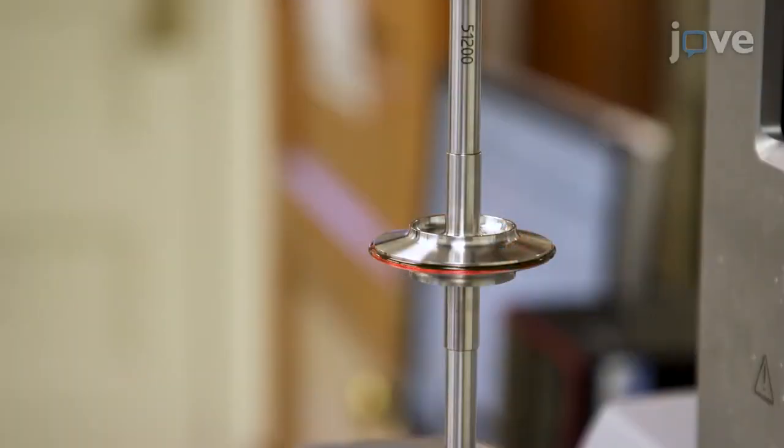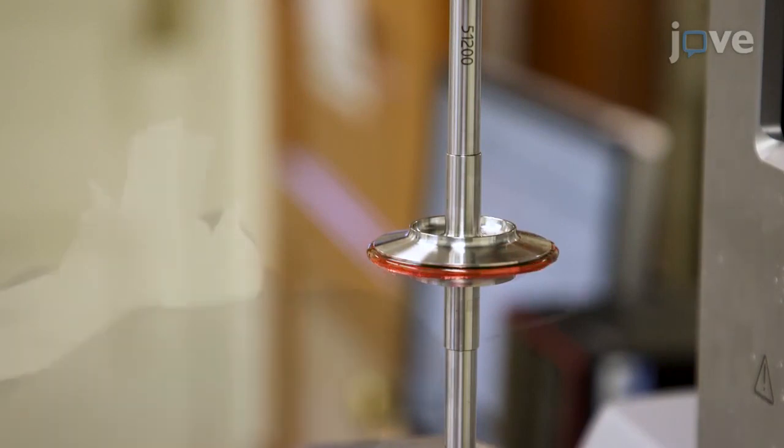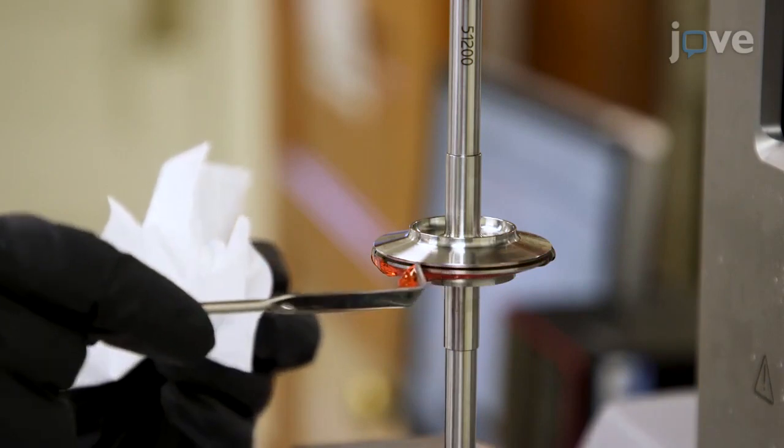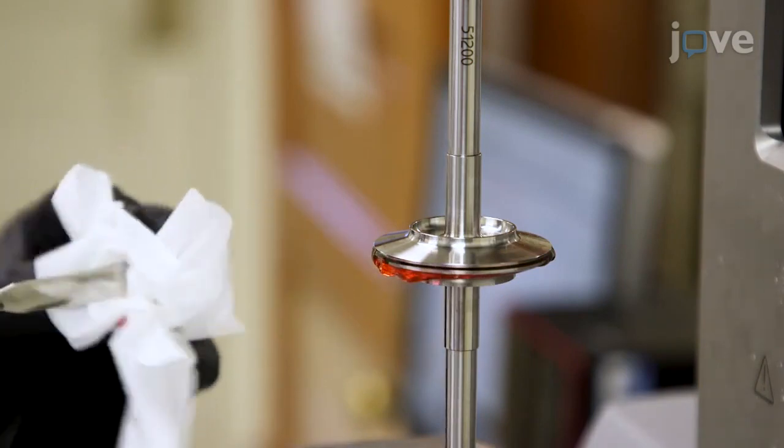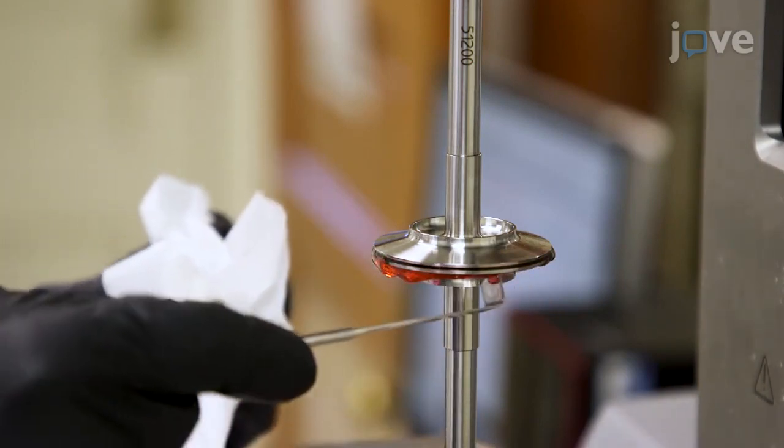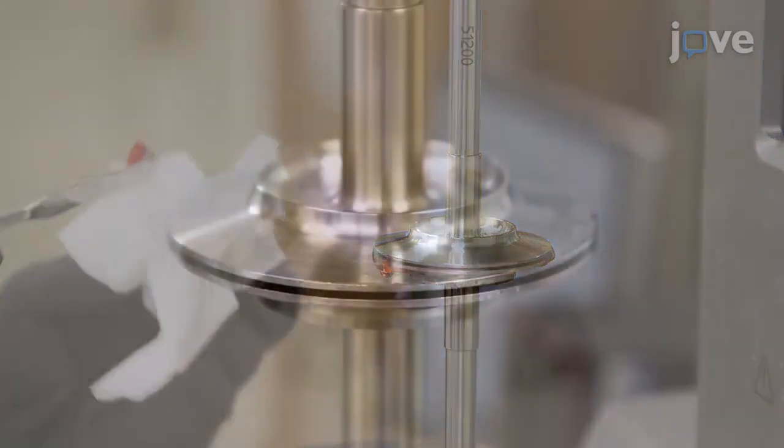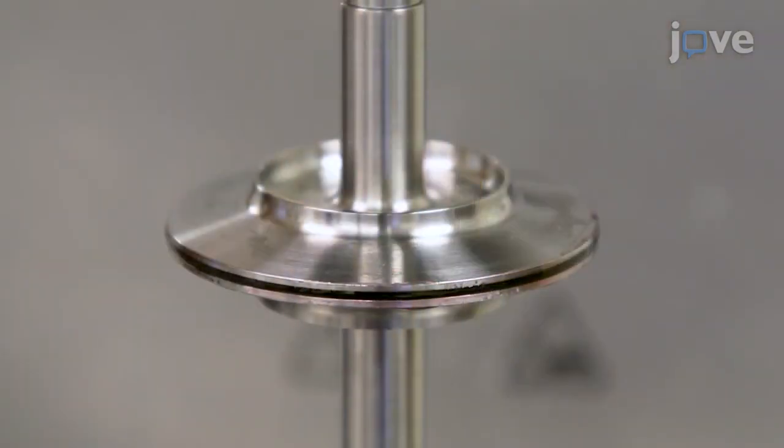Work with the measuring system set to Trim Gap. Use a square-ended spatula at the edge of the geometry to gently trim excess material. Return to the measurement gap before continuing.